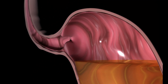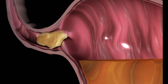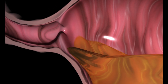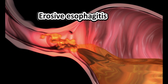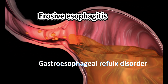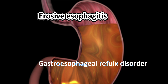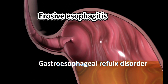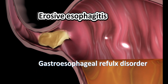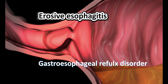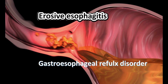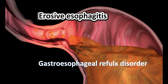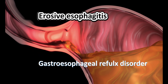Famotidine can also be used in conditions where gastric acid is refluxed back into the esophagus. It can be used in the treatment of erosive esophagitis and gastroesophageal reflux disorder. Both conditions involve excess gastric acid secretion and its backflow into the esophagus, producing irritation and inflammation. Since famotidine reduces gastric acid secretion, it can manage both conditions.